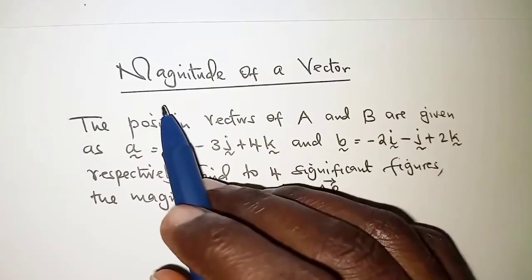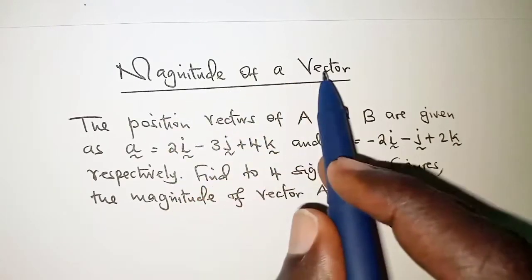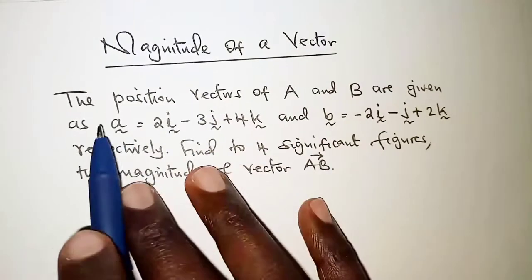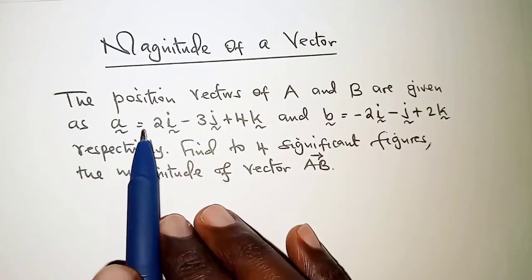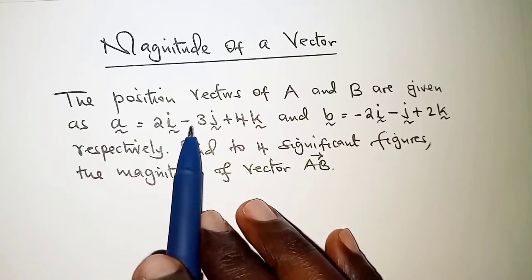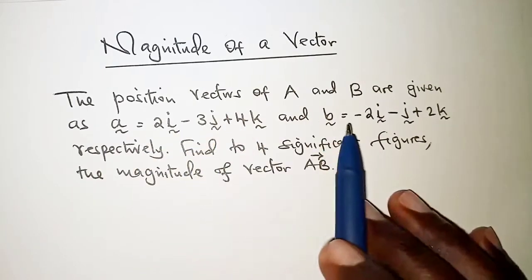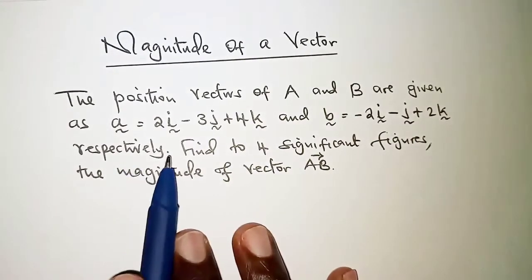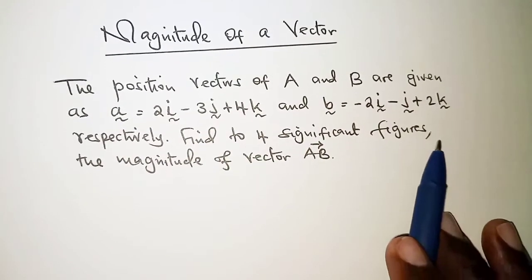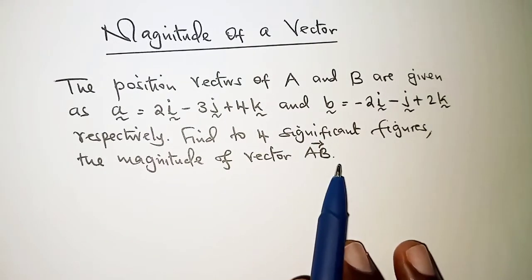Welcome. Today's presentation is on magnitude of a vector. The question reads: the position vectors of A and B are given as A = 2i - 3j + 4k and B = -2i - j + 2k respectively. Find to 4 significant figures the magnitude of vector AB.